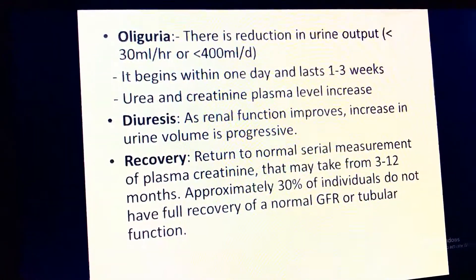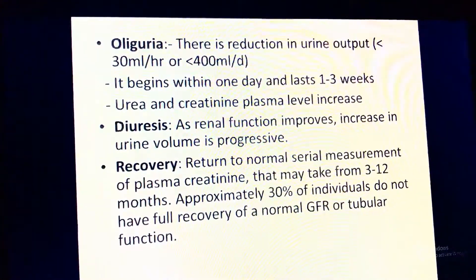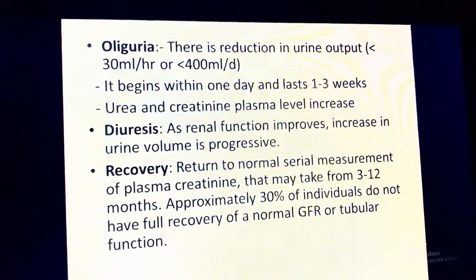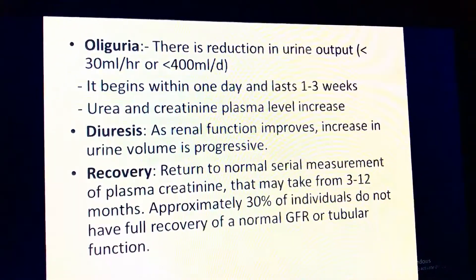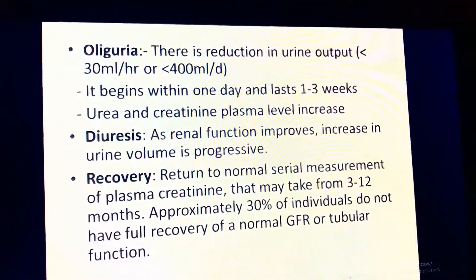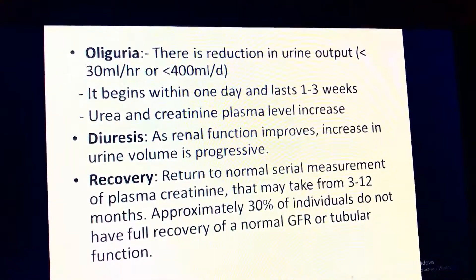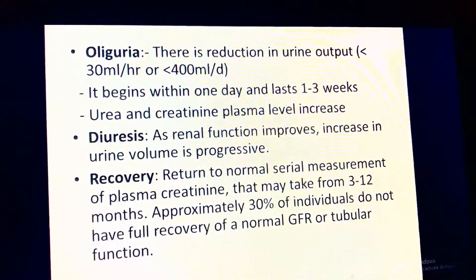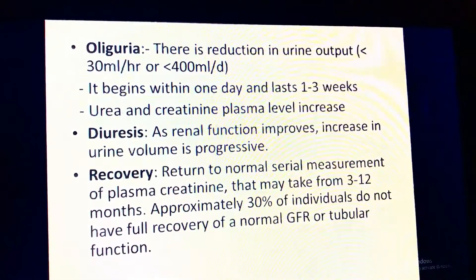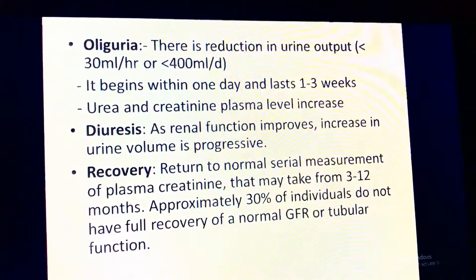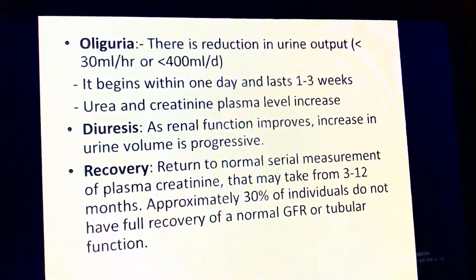In the oliguric phase, there is a reduction in urine output to less than 30 mL per hour or less than 400 mL per day. For a normal adult, urine output is calculated as 0.5 mL times body weight in kg per hour. The oliguric phase begins within one day and lasts one to three weeks. Urea and creatinine plasma levels increase during this phase.